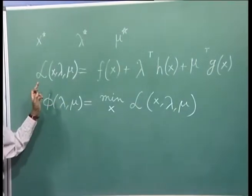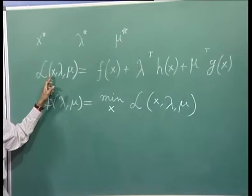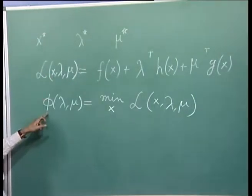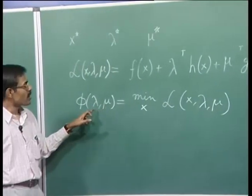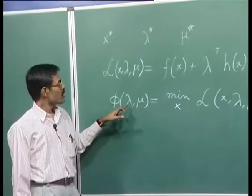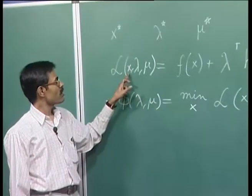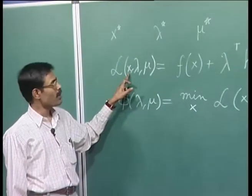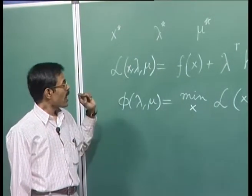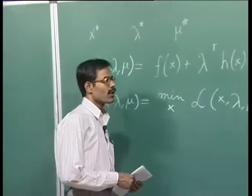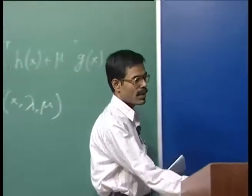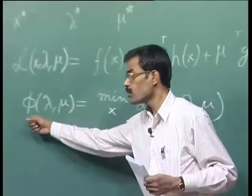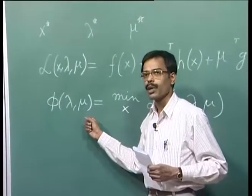The original function was with respect to x — the primal variable — and this new dual function is a function of the Lagrange multipliers, called the dual variables. The original problem is sometimes called the primal problem, and from the dual function we will define a dual problem.